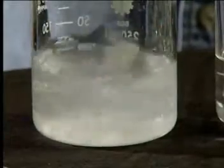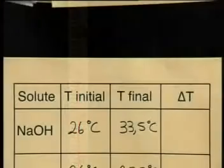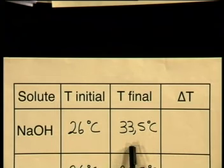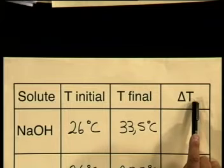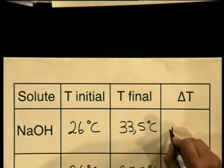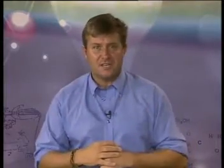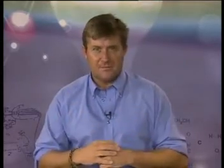Let's check the temperature now and record it. The final temperature is 33.5 degrees Celsius. We can now calculate the change in temperature by subtracting the initial temperature from the final temperature. The change in temperature is plus 7.5 degrees Celsius. Did you notice that the temperature increased when the solute was added to the solvent? In other words, energy was released in the form of heat during this process. This is a special type of reaction known as an exothermic reaction.